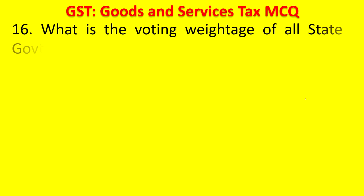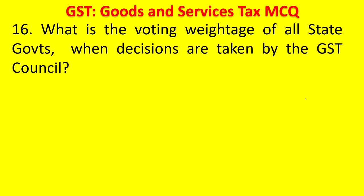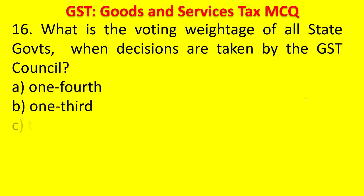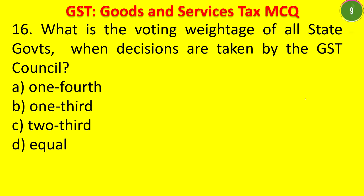Question 16: What is the voting weightage of all state governments when decisions are taken by the GST Council? Options: one-fourth, one-third, two-third, equal. The answer is two-third — all 28 state governments together hold two-thirds of the vote. One-third goes to the central government. A three-fourths majority is required to pass any bill in the council.